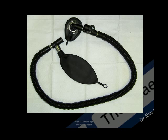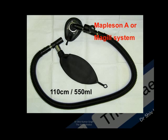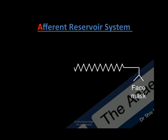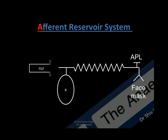Looking at the first of the Mapleson classification: the breathing system has a large breathing tubing with a capacity of 150 mLs and a length of 110 centimeters. Mapleson classification of this system is A, but Miller classified it as an afferent reservoir system. The system has corrugated tubing, a face mask, APL valve, a reservoir bag, and fresh gas flows. The reservoir bag is actually very near to the fresh gas flow — that is the afferent limb, just like the afferent arterial side where blood flows in.